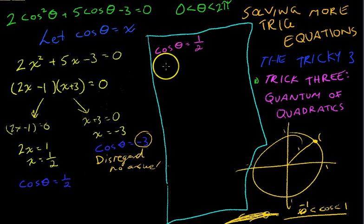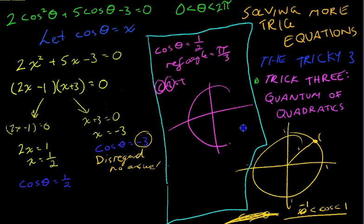Okay, so reference angle pi on 3 equals pi on 3. Now we can see that it's positive, so it's going to exist in this quadrant and this quadrant on the unit circle. It's going to exist here and here. Pi on 3.